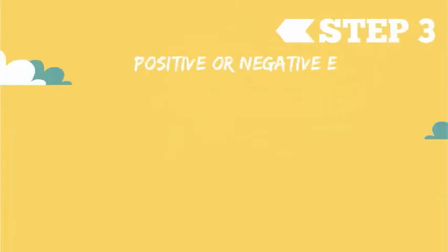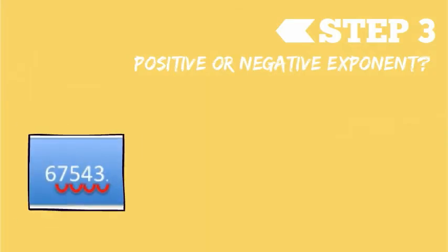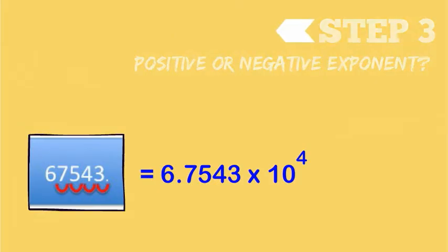The next thing is deciding, is that going to be a positive exponent or a negative exponent? If you move your decimal to the left, that means that the original number had to be very large. So we expect to write a positive number for the exponent.